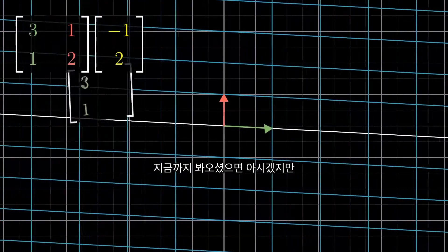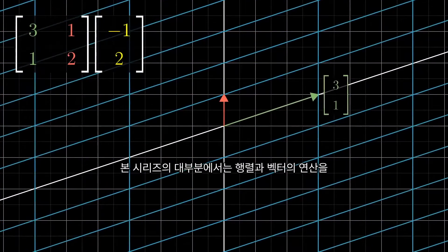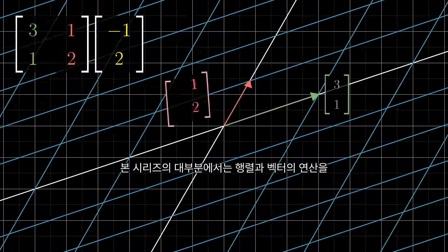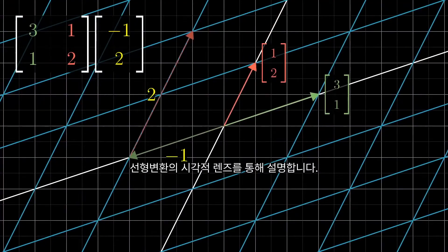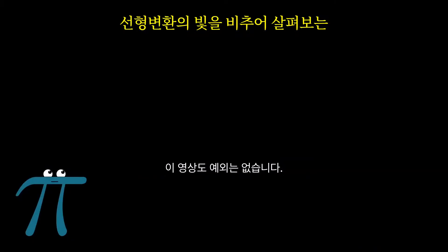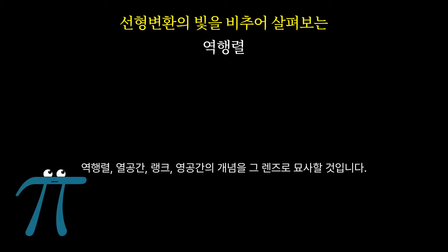As you can probably tell by now, the bulk of this series is on understanding matrix and vector operations through that more visual lens of linear transformations. This video is no exception, describing the concepts of inverse matrices, column space, rank, and null space through that lens.